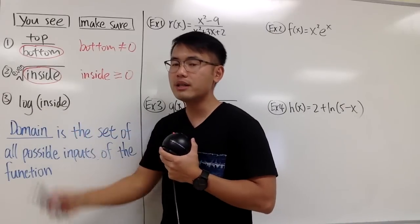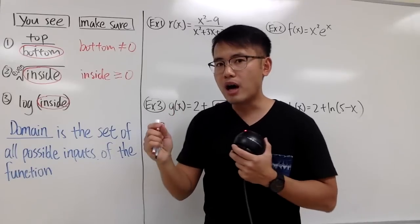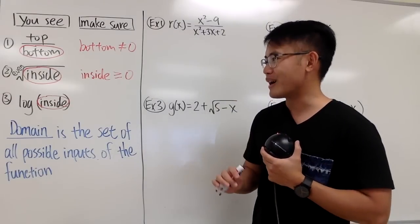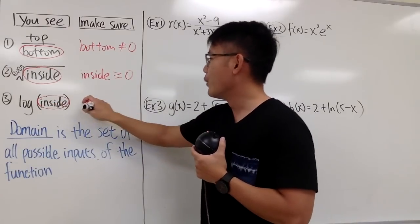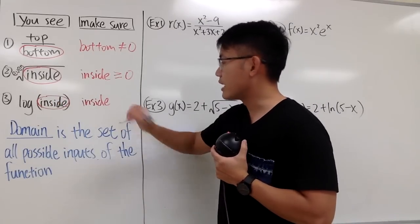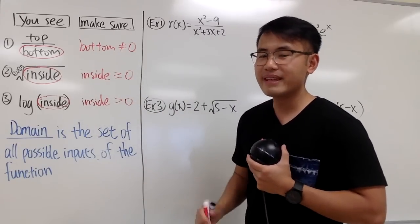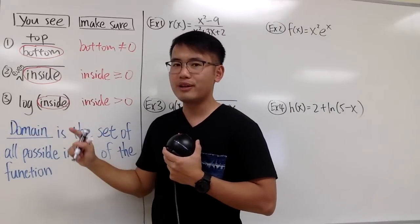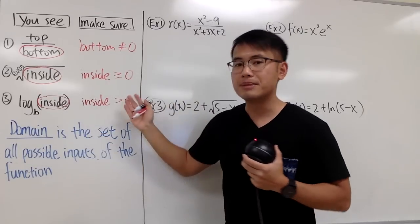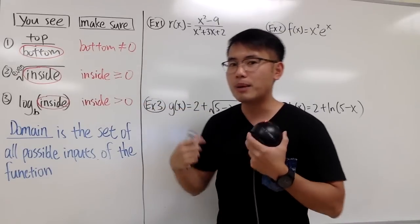And now for the third situation: when we have a logarithm — log of an expression inside. In this case, we have to make sure that the inside is valid. Log of zero is not defined, and log of a negative number is a complex number, so it's also not good. So we are going to make sure that the inside for the log is greater than zero — the only difference is that the inside cannot be zero anymore. When you have log with any base, as long as the base is legit, you do the same thing. So here are these three conditions, and as long as you remember them, you will be setting up inequalities to help you solve for the domain.